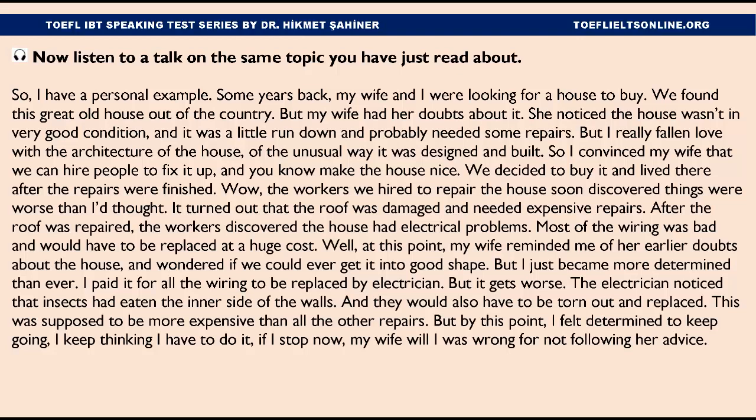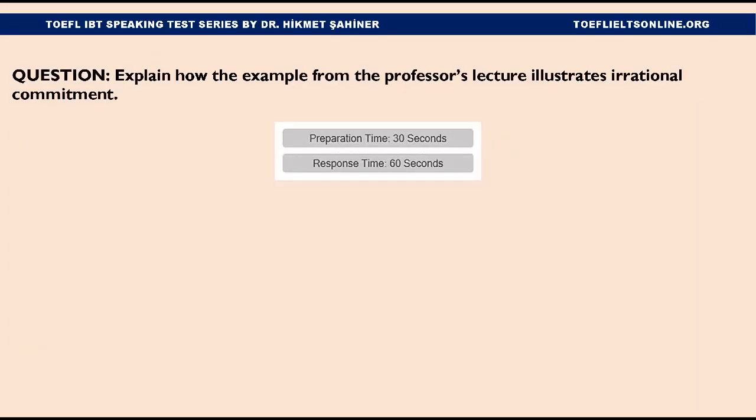'At this point, my wife reminded me of her earlier doubts about the house and wondered if we could ever get it in good shape. But I just became more determined than ever. I paid for all the wiring to be replaced by an electrician. But it gets worse — the electrician noticed that insects had eaten into some of the walls, and they would also have to be torn out and replaced. This was going to be more expensive than all the other repairs. But by this point, I felt determined to keep going. I kept thinking: I have to do it. If I stop now, my wife will think I was wrong for not following her advice.' Explain how the example from the professor's lecture illustrates irrational commitment.